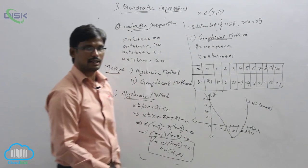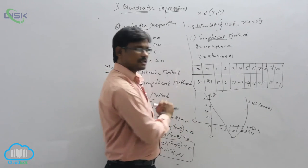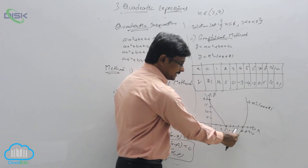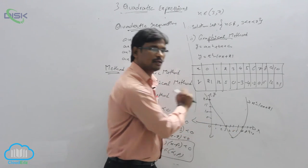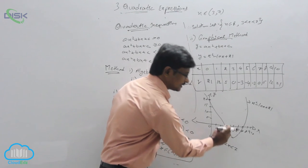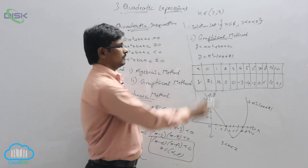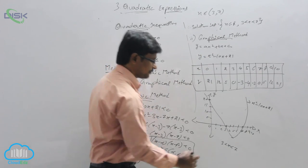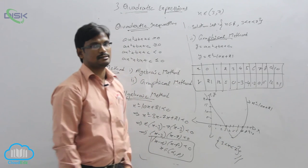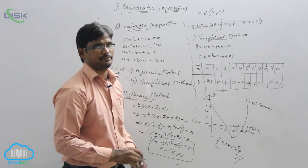Now the inequality is x² minus 10x plus 21 less than 0. Which values here are less than 0? Clearly the graph is positive outside, and only in one interval is it negative. If x lies between 3 and 7, we will have the negative value of this quadratic expression. Therefore, the solution set is 3 < x < 7. These are the two methods of solving quadratic inequation.